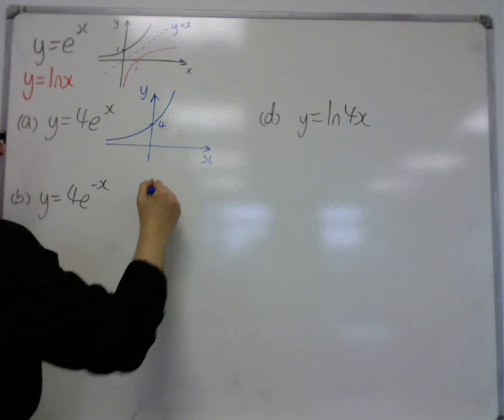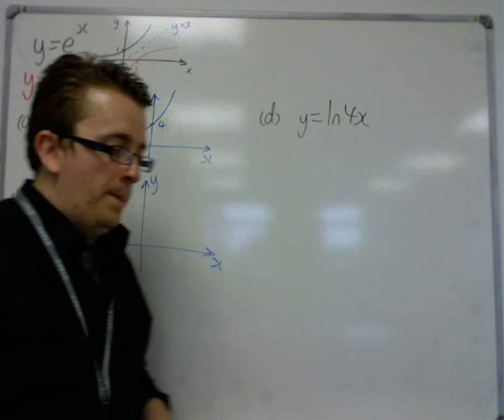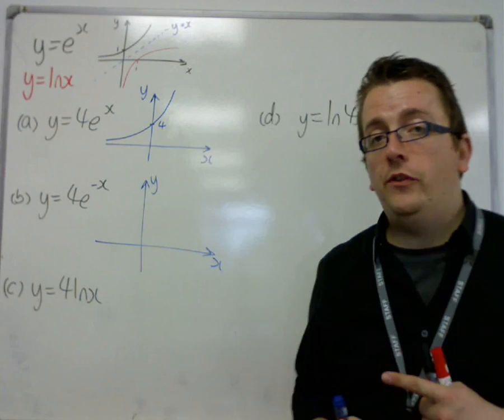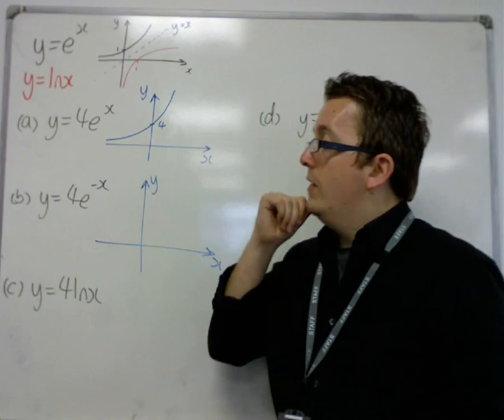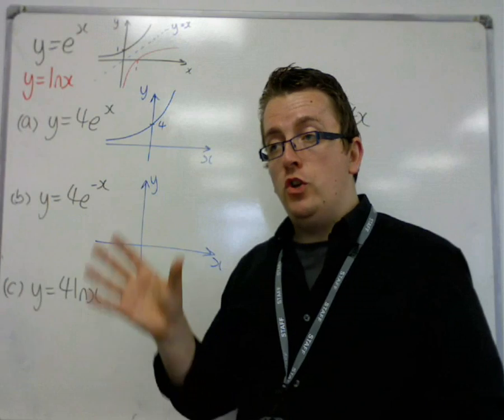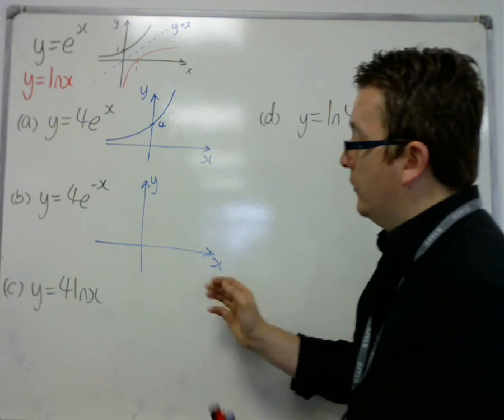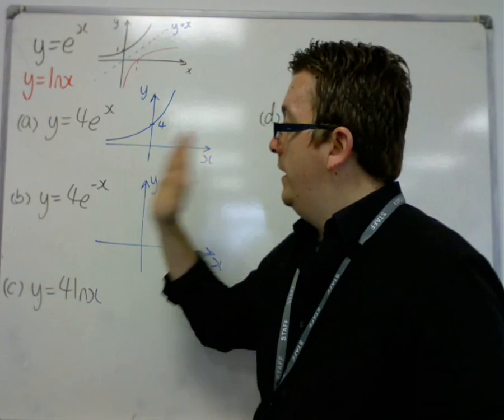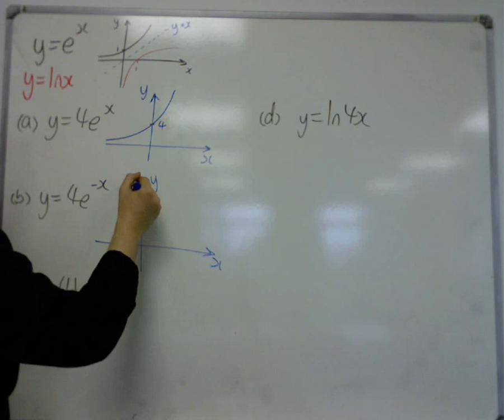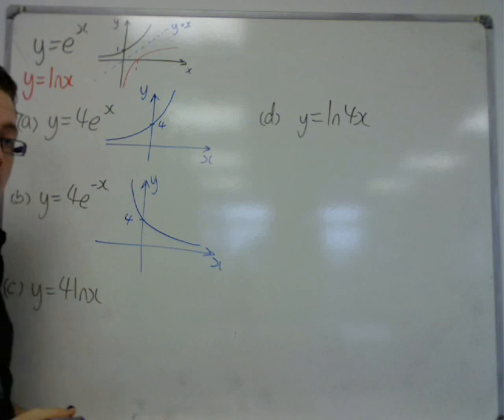Now, if we look at y is equal to 4e to the minus x, then there must be a connection between these two. I mean, one is 4e to the x and one is 4e to the minus x. And you'll notice that from core 2, the graph transformations, that if I replace x with minus x, then this is a reflection in the y axis, okay. Because it's the x that is changing. I am changing the x so that all the positive x's become negative, and all the negative become positive. So, it flips this graph in the y axis. So, now it's still going through 4, but it's going the other way.